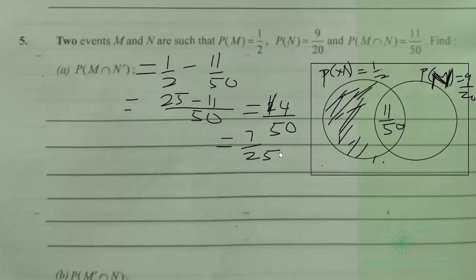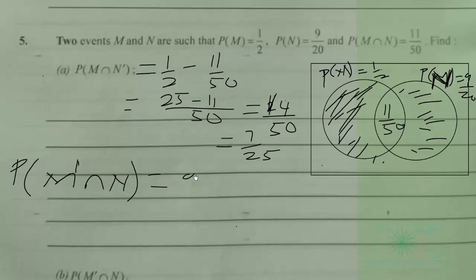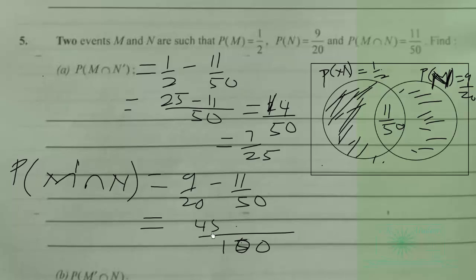For M prime intersection N — the region of N outside M — this equals 9 over 20 minus 11 over 50. The LCM is 100; 20 goes into 100 five times, giving 5 times 9 equals 45; 50 goes into 100 twice, giving 2 times 11 equals 22. So 45 minus 22 gives us 23 over 100. The probability of M prime intersection N is 23 over 100.